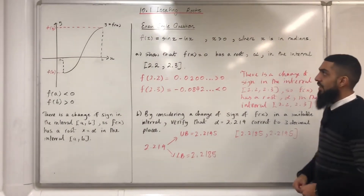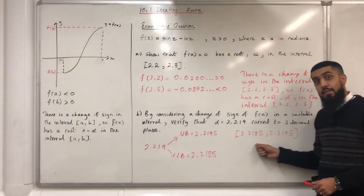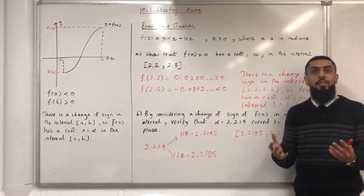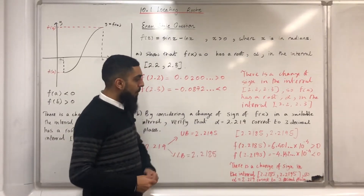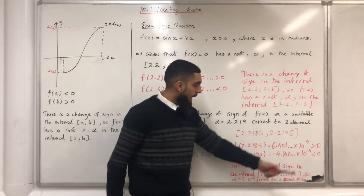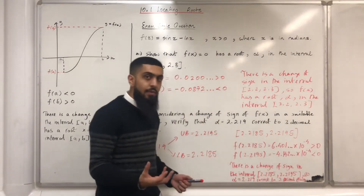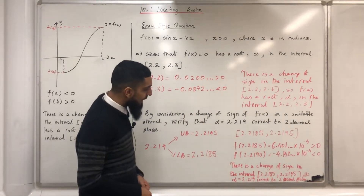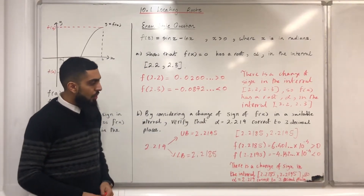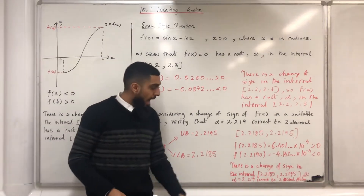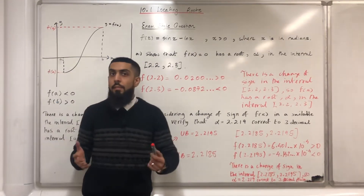The next step is to work out the value of f(x) at x = 2.2185 and x = 2.2195 respectively. After using my calculator, I get f(2.2185) > 0 and f(2.2195) < 0. So I can write a conclusion: there is a change of sign in the interval 2.2185 to 2.2195, so α = 2.219 correct to three decimal places.